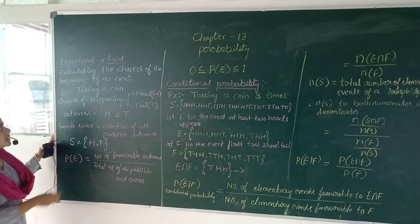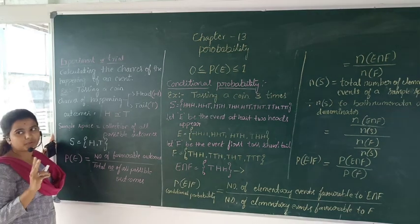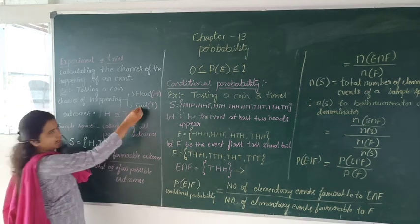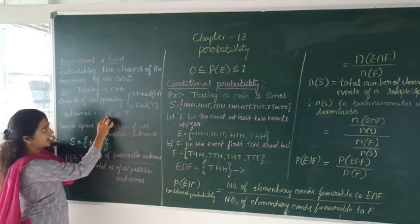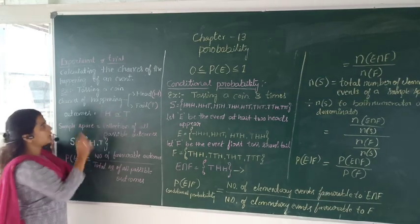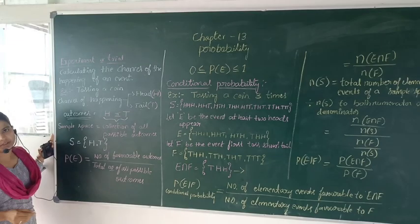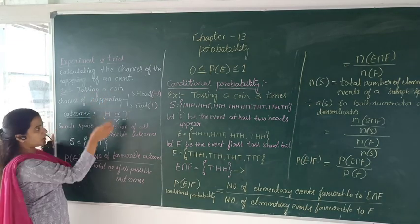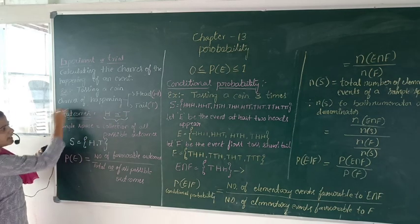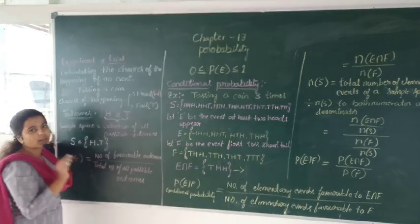Here I am going to toss a coin. The chances of happening are head or tail, because the coin has only two faces. So the probability of getting the chances of happening is either head or tail. What I am going to get after the experiment, that we call outcomes. After tossing a coin, the outcomes are head or tail.